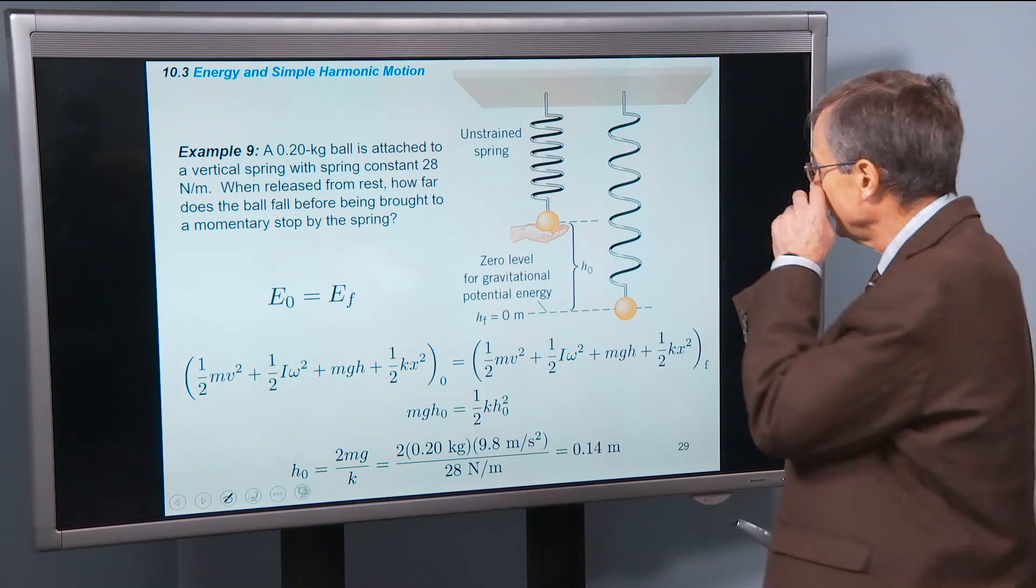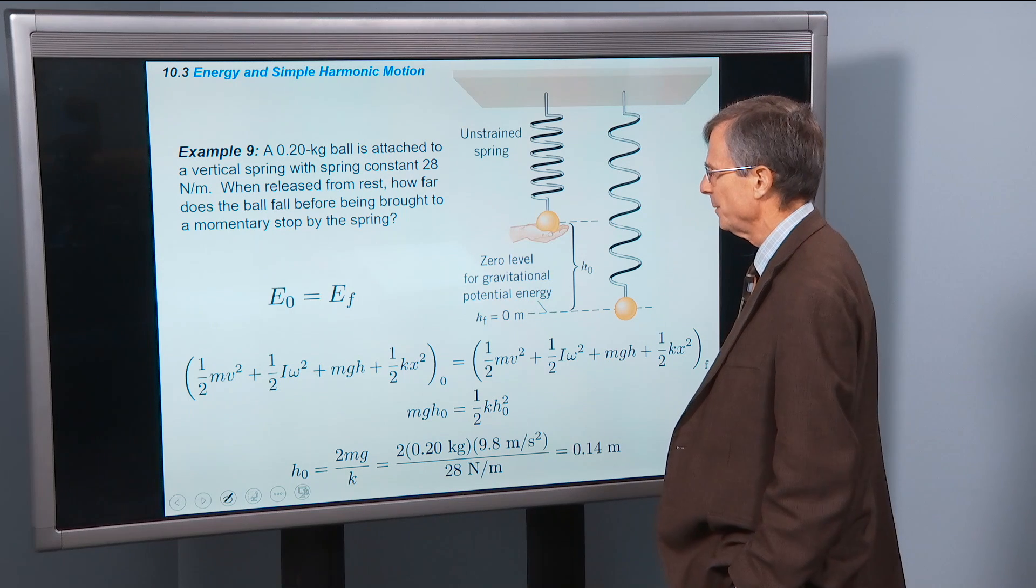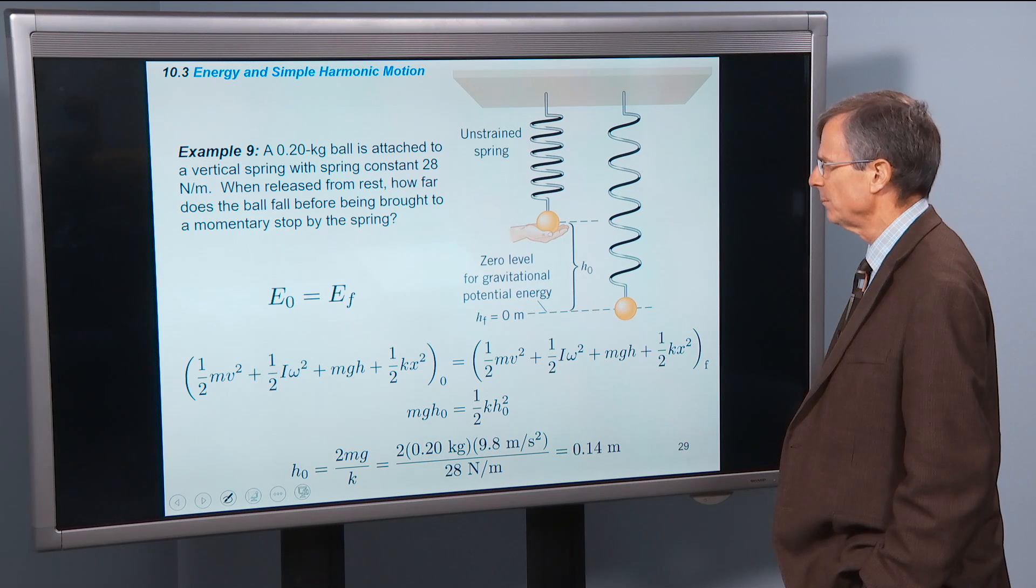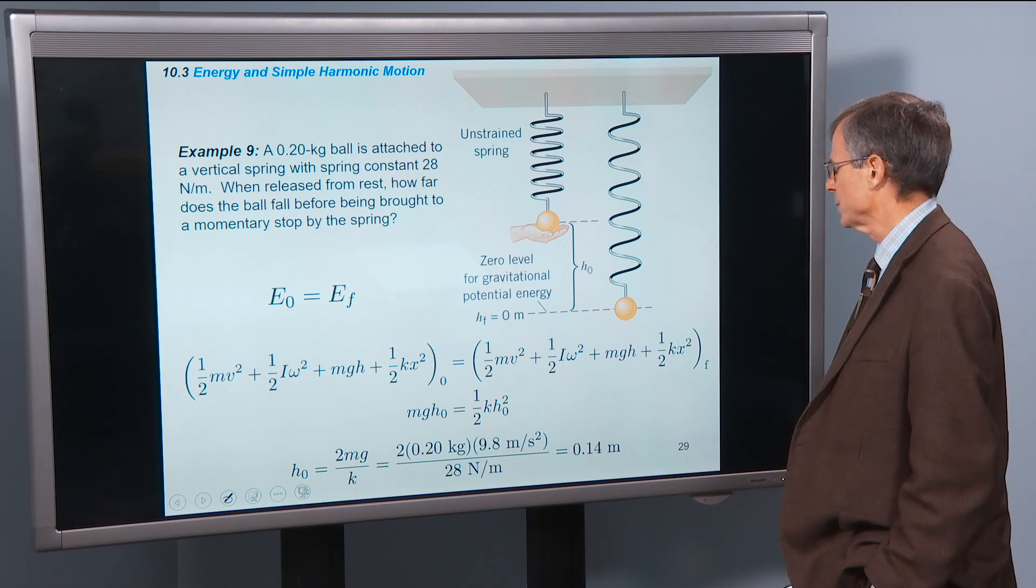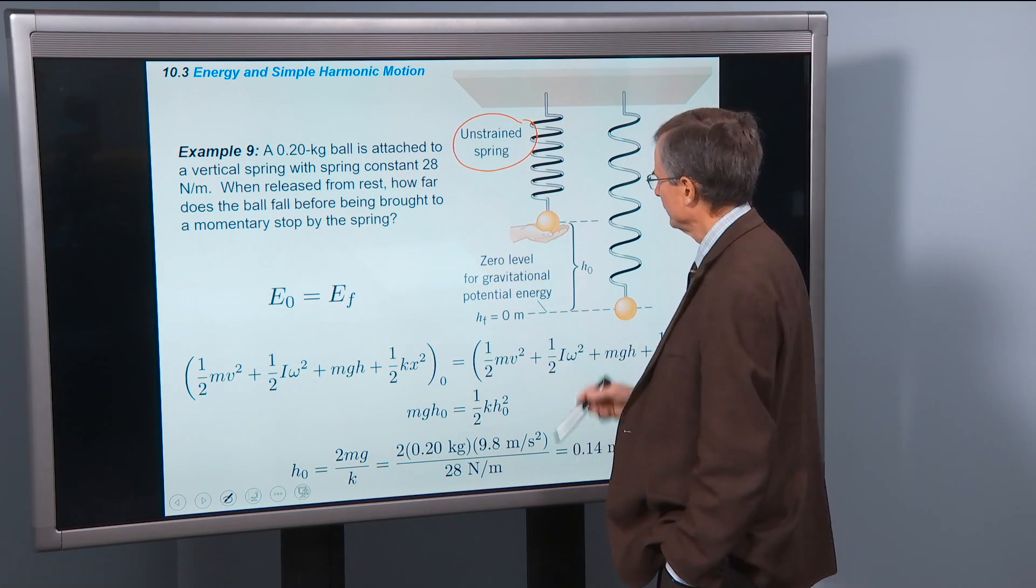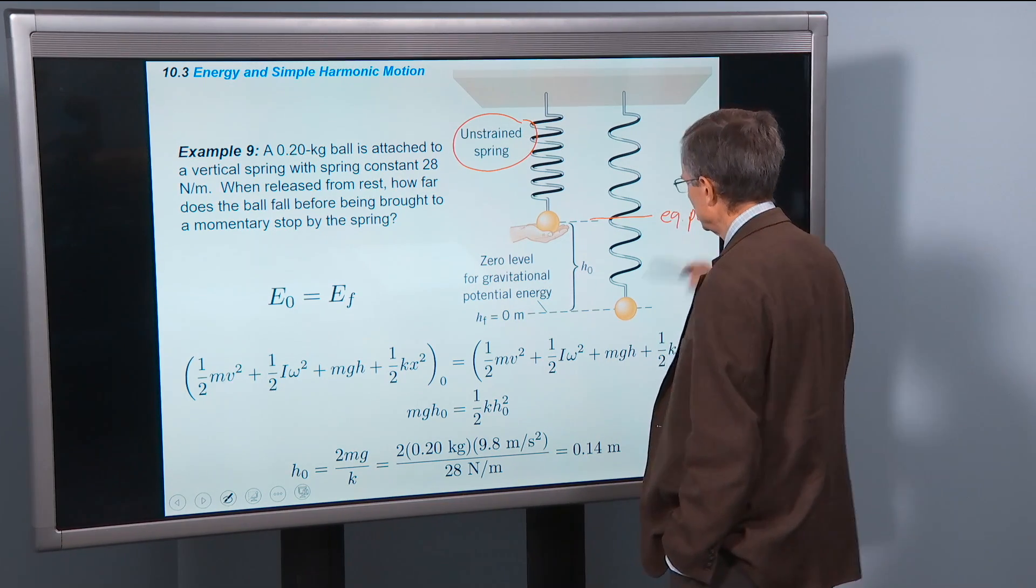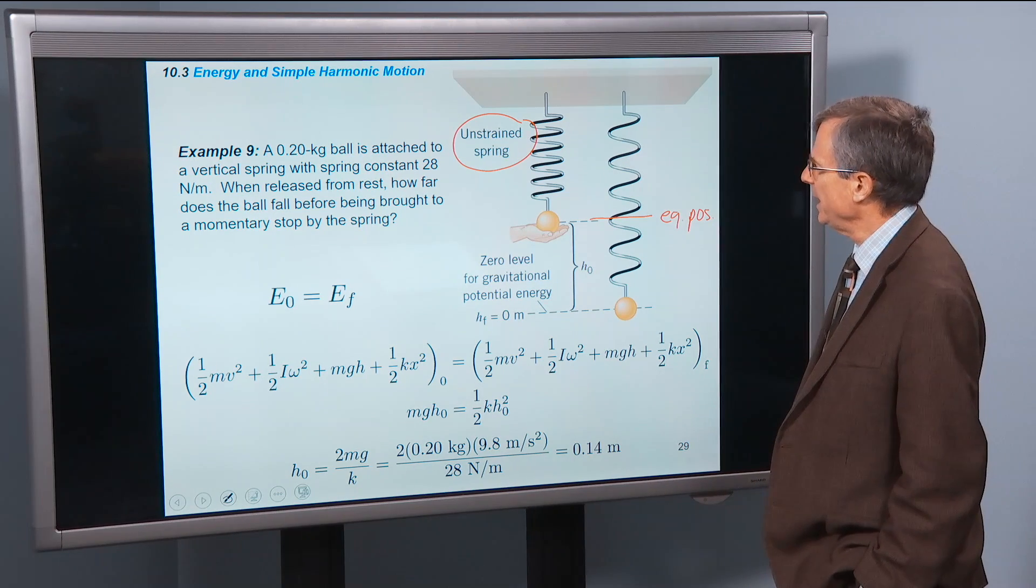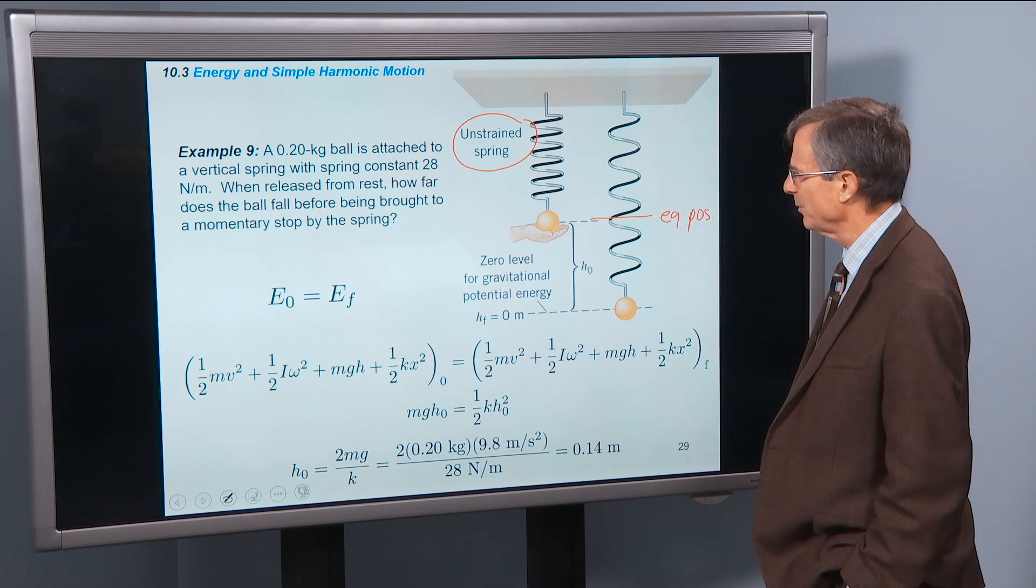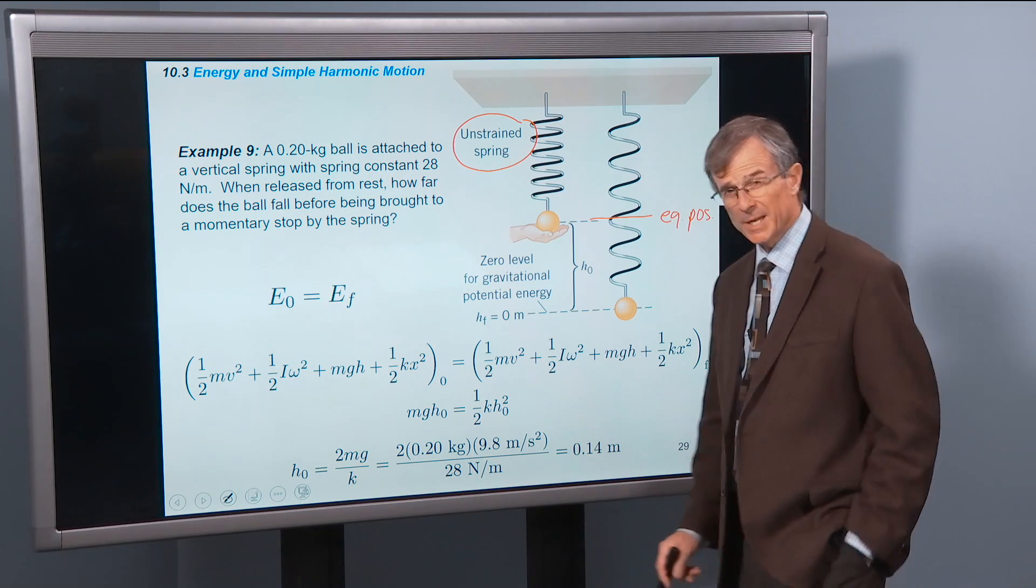Here's a non-trivial example. A 0.2 kilogram ball is attached to a vertical spring with spring constant of 28 newtons per meter. When released from rest, how far does the ball fall before being brought to a momentary stop by the spring? So here's an unstrained spring. This is the equilibrium position. And it is released from rest. How far does the ball fall before being brought to a momentary stop by the spring? Now what's actually going to happen here?